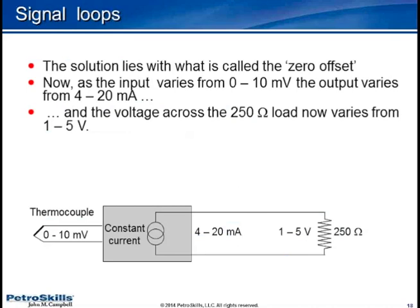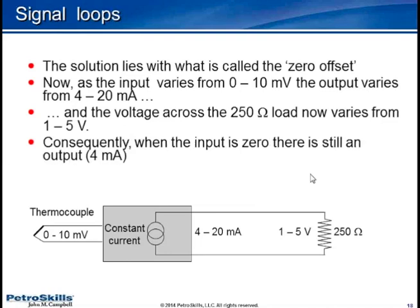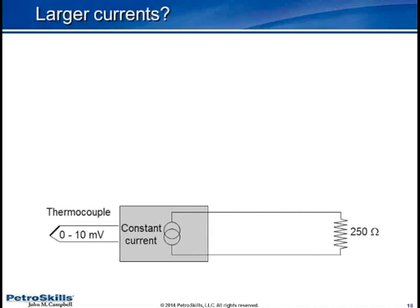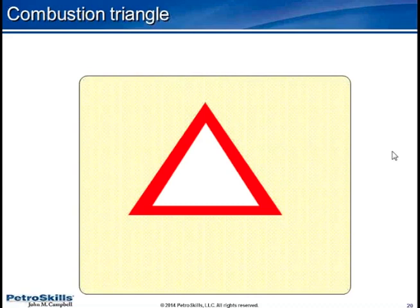Why milliamps? Why don't we use a much higher current? It would be less susceptible to noise. And the answer lies in what we call the combustion triangle.